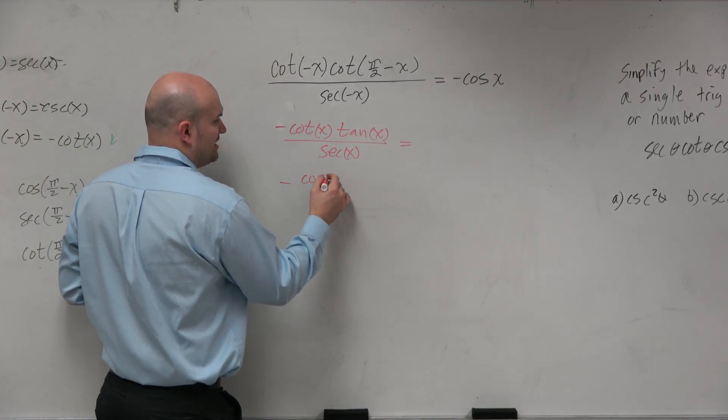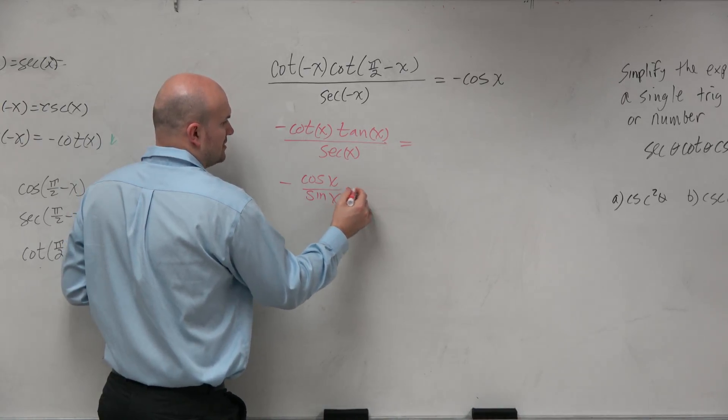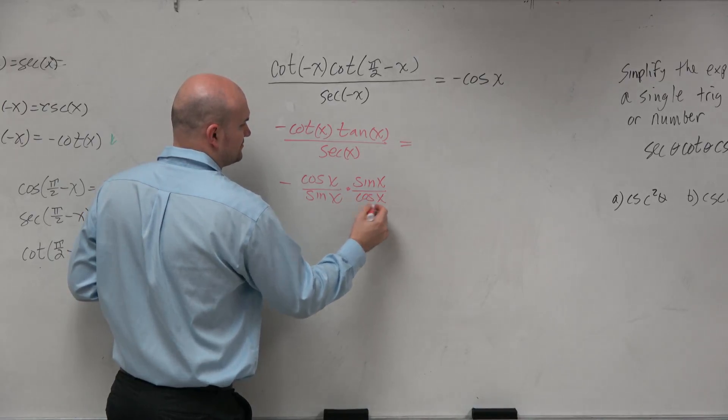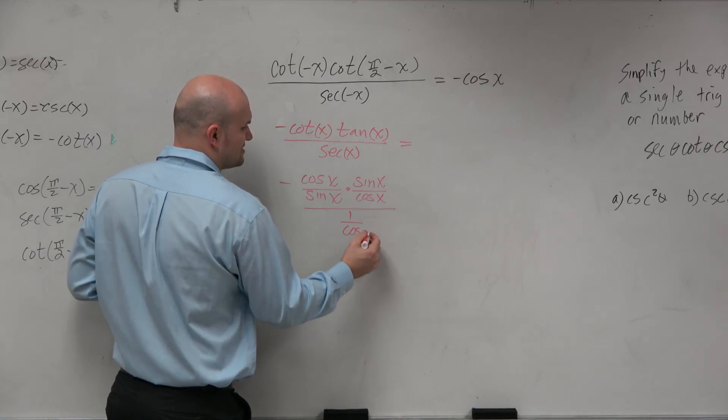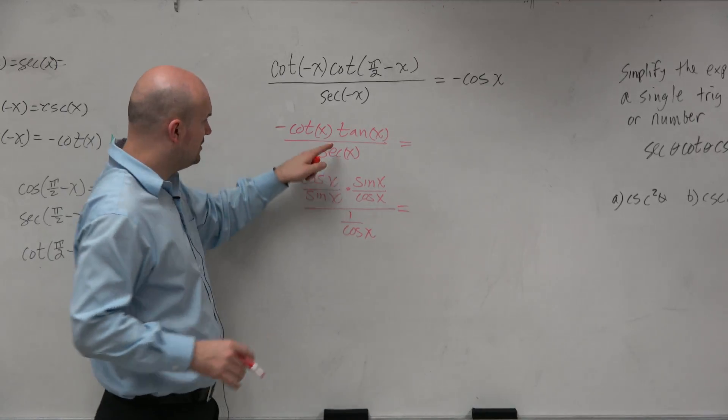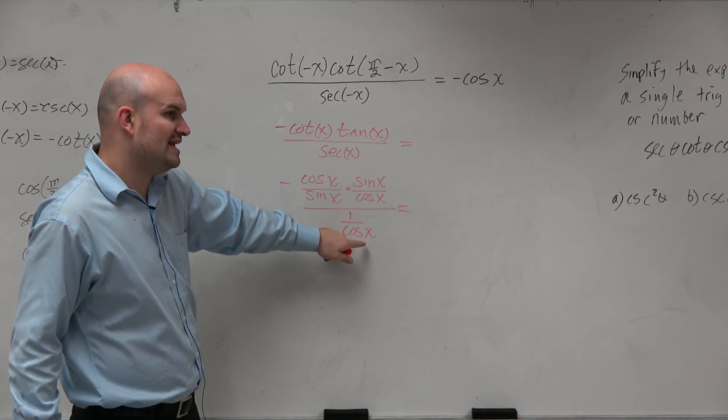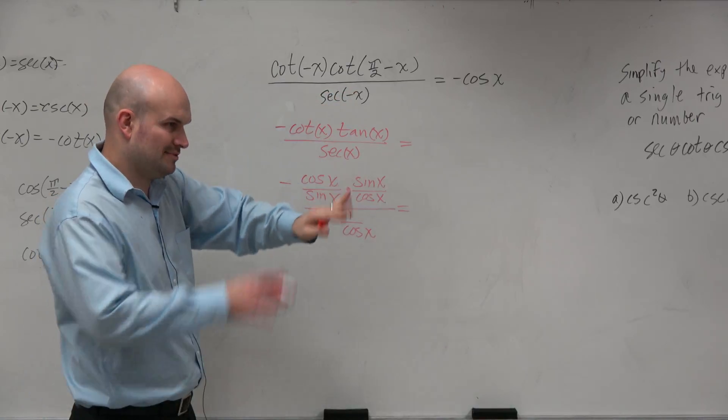Therefore, this can be rewritten as cosine of x over sine of x times sine of x over cosine of x divided by 1 over cosine of x. The reason why I changed that at all is because I want them all to be of the angle x. I don't want them to be of the negative x. You want the angles to be the same.